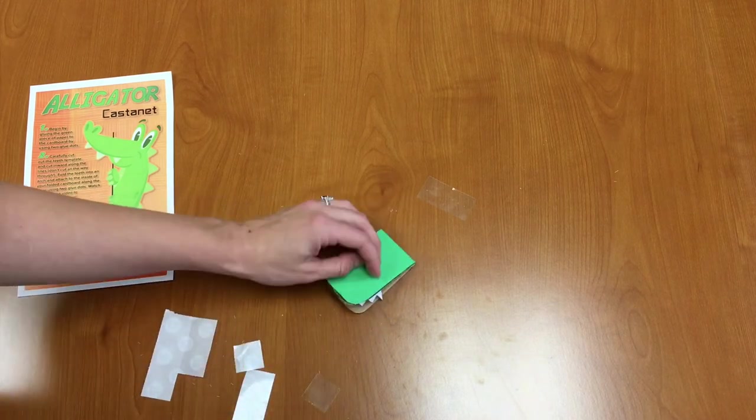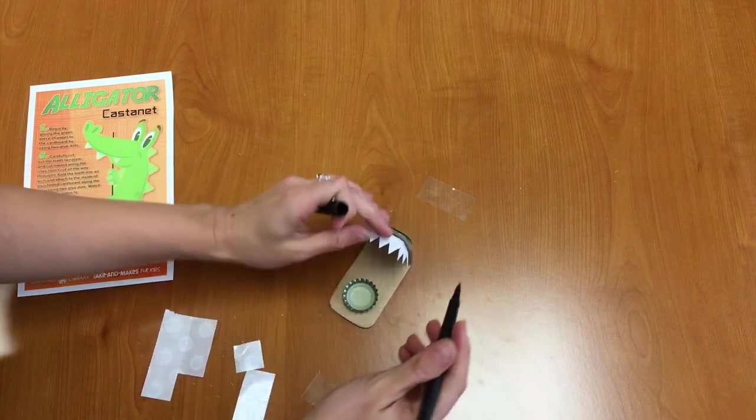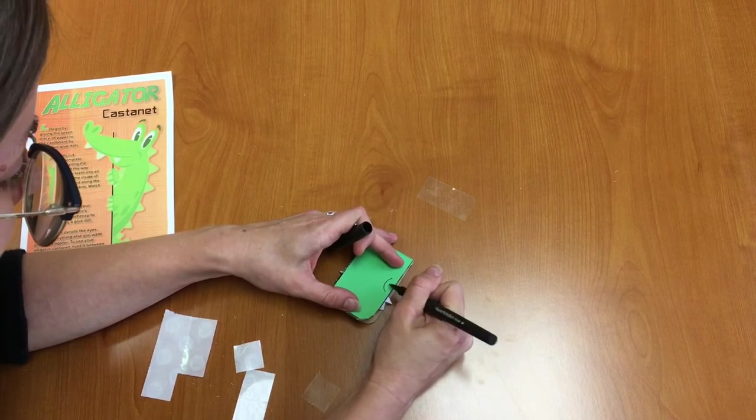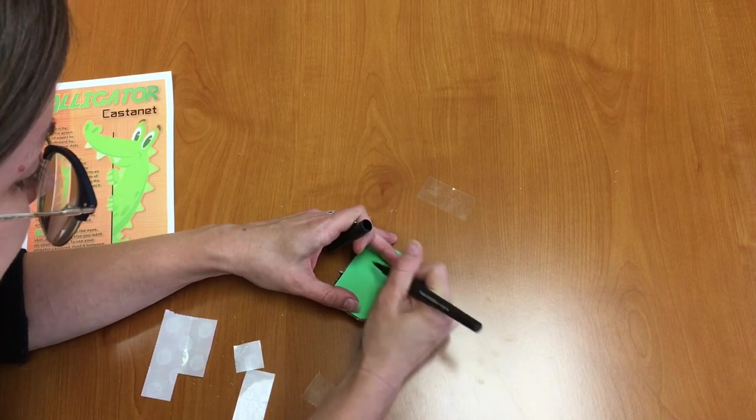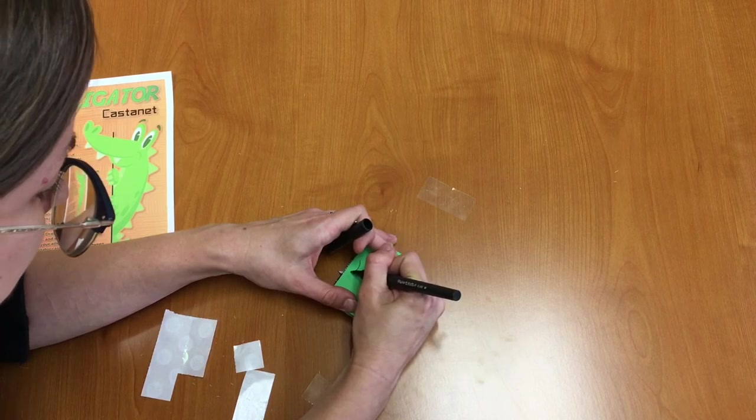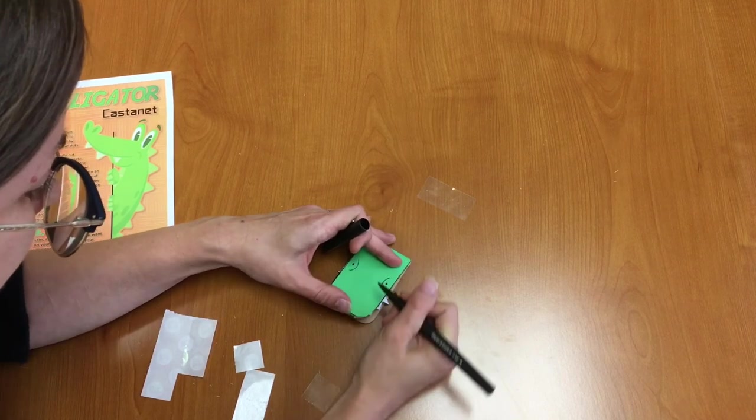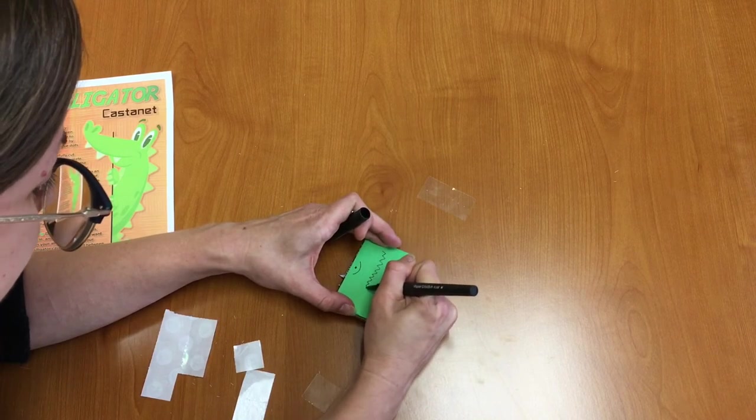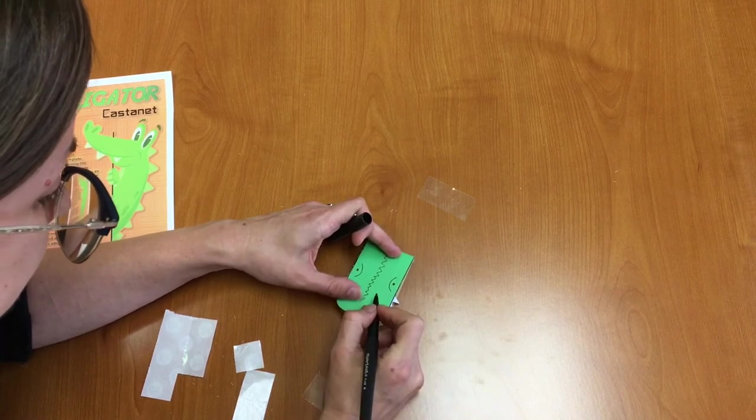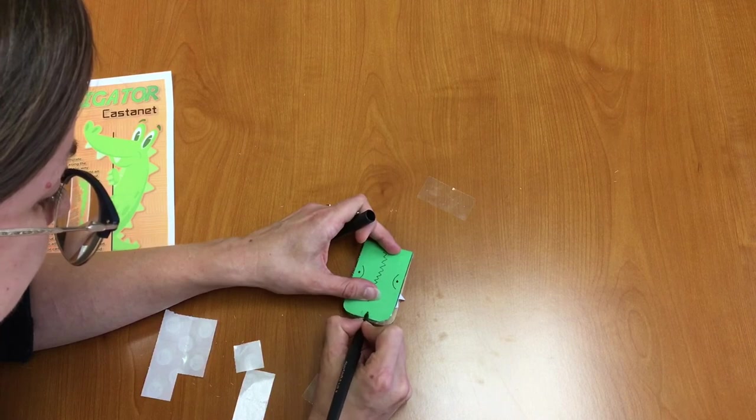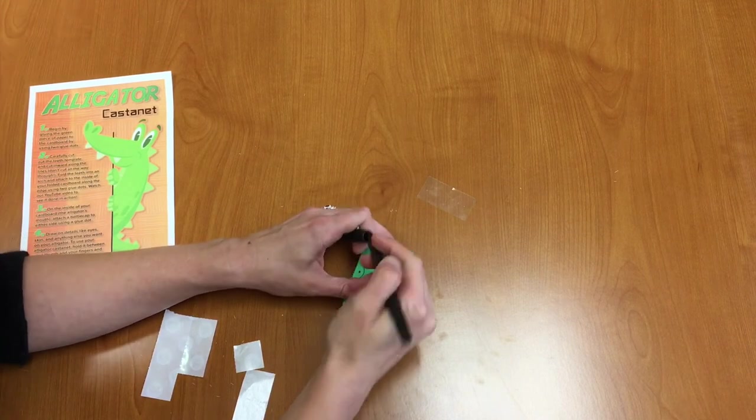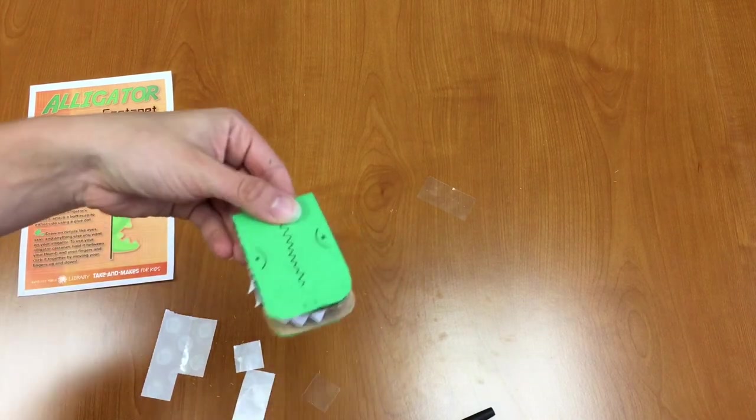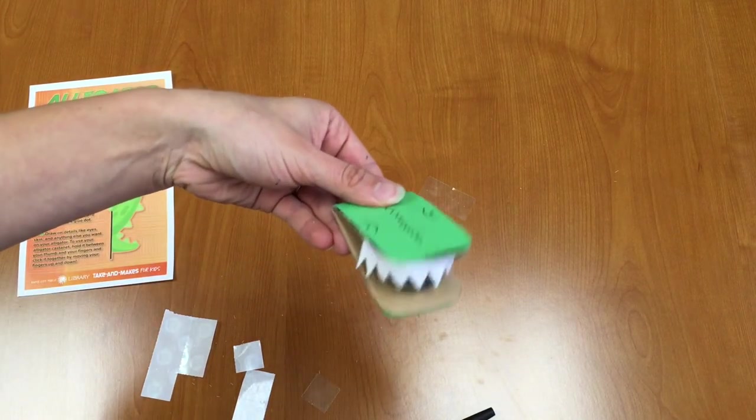Now last but not least you can draw some details on your alligator. So I'm going to draw some eyes. I'm going to draw some ridges on its head. And I'm going to draw nostrils. And so now you have your alligator castanet.